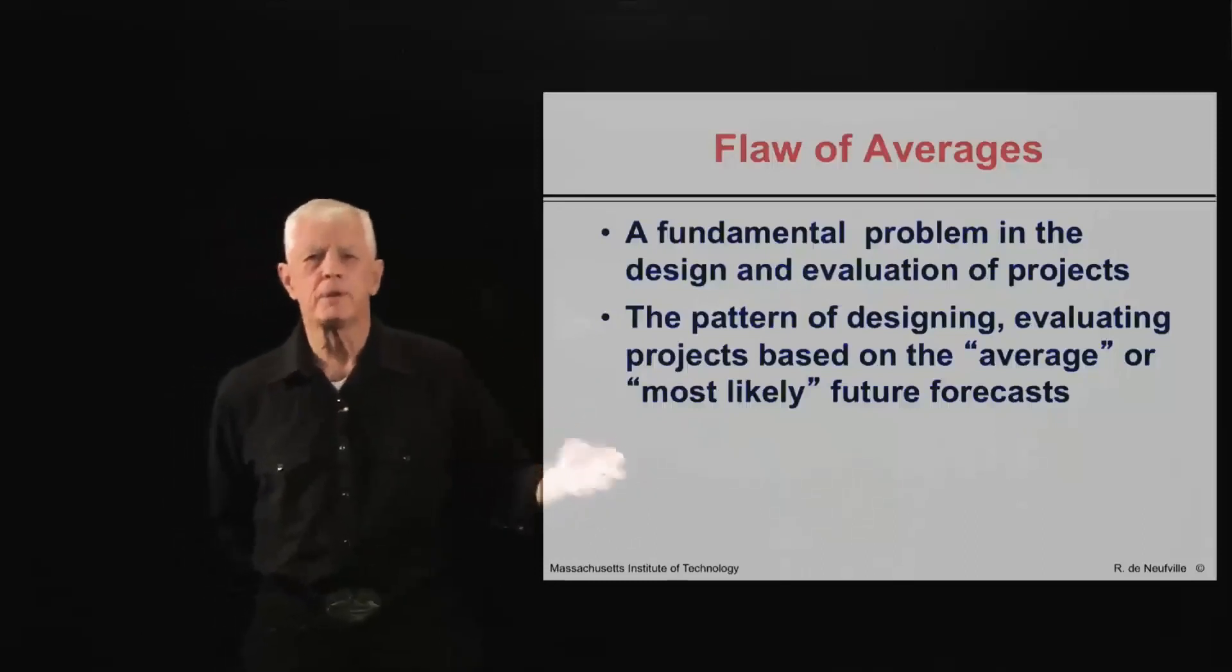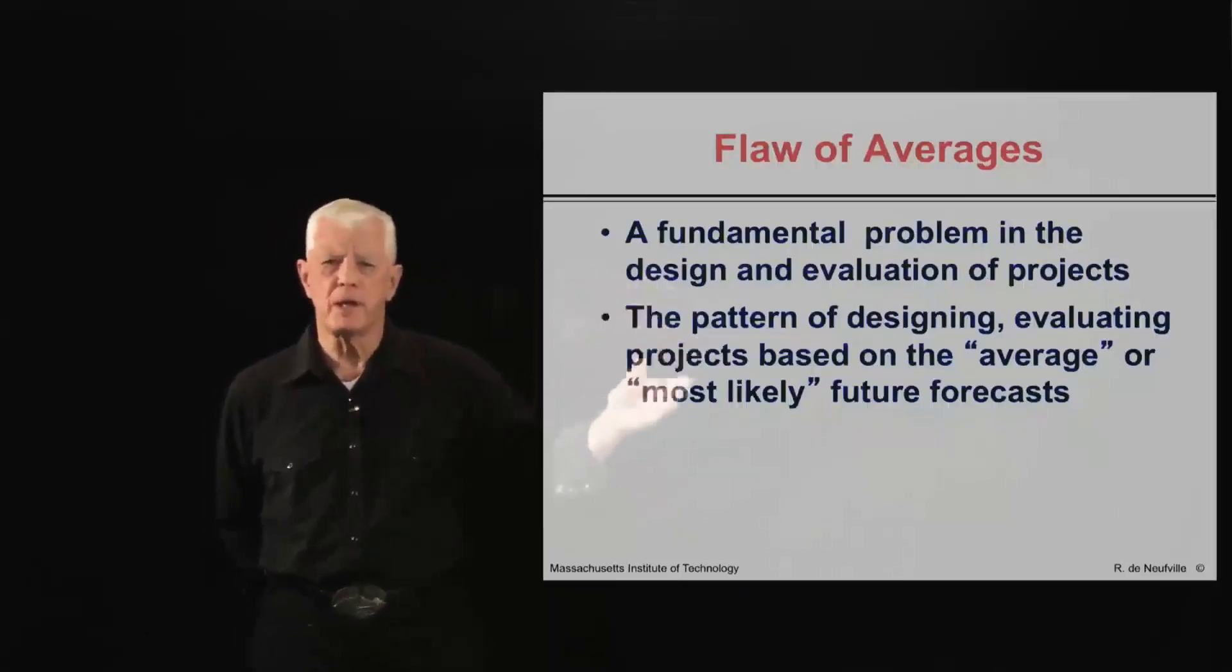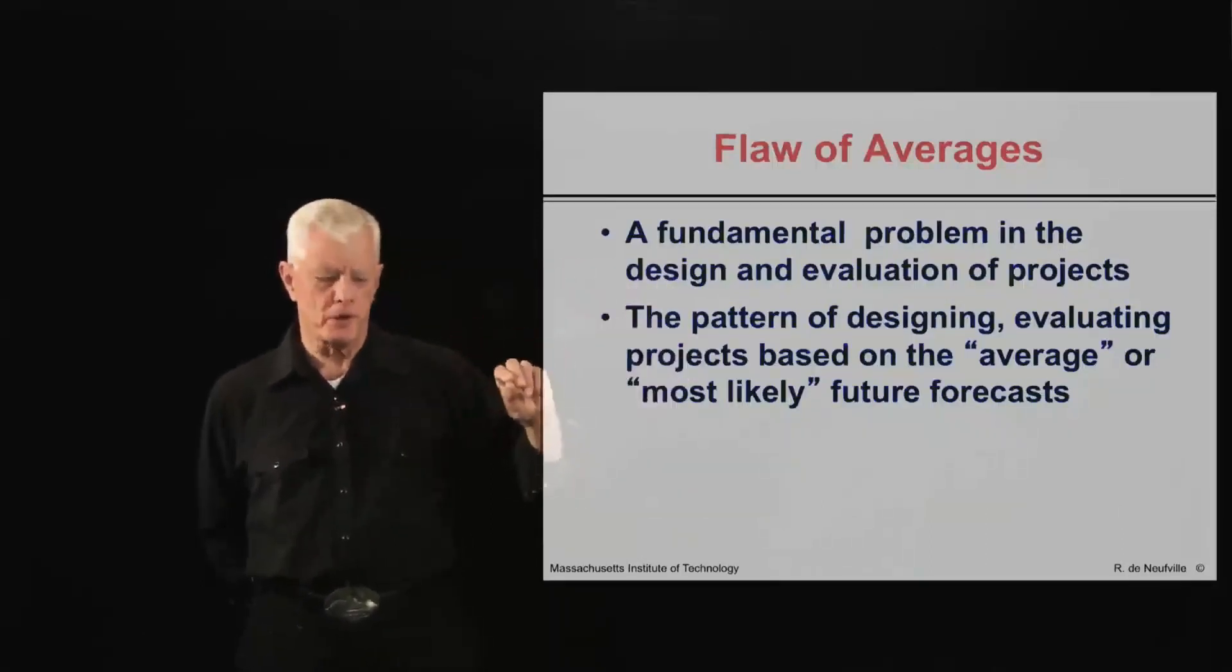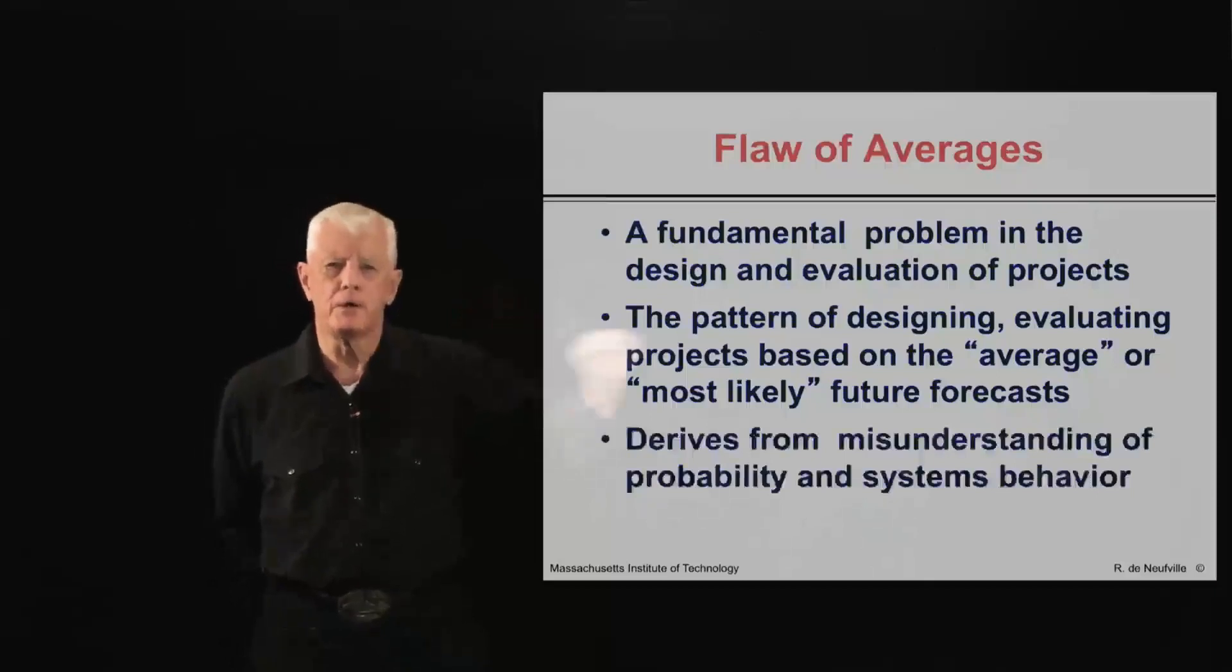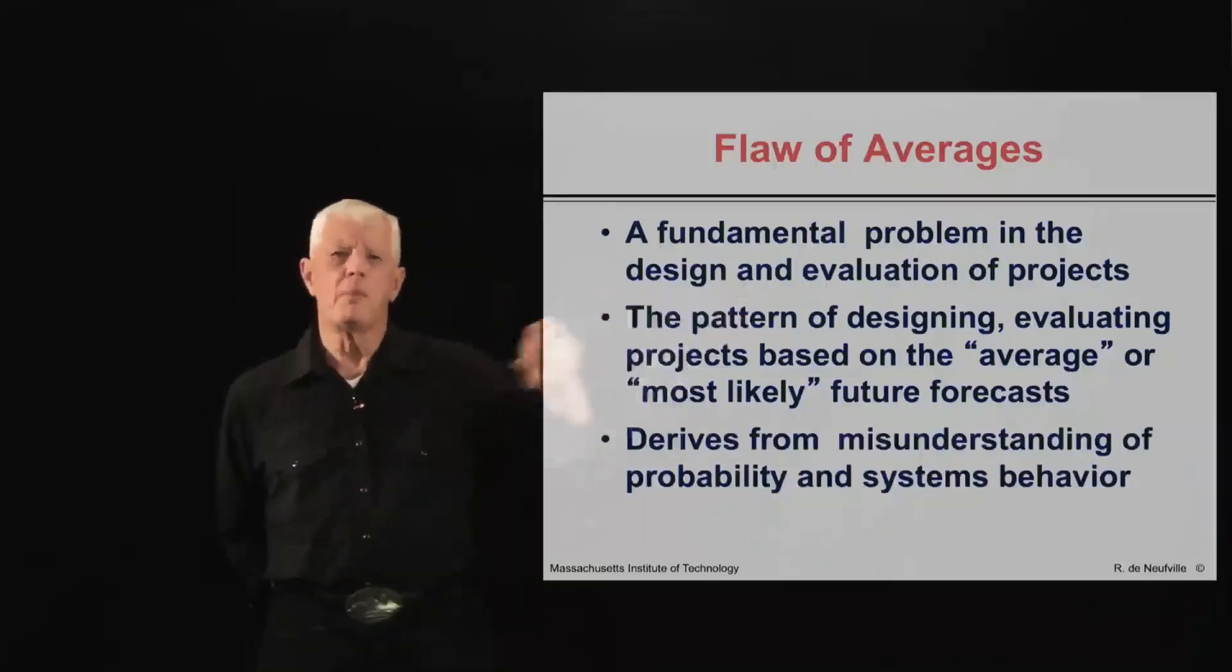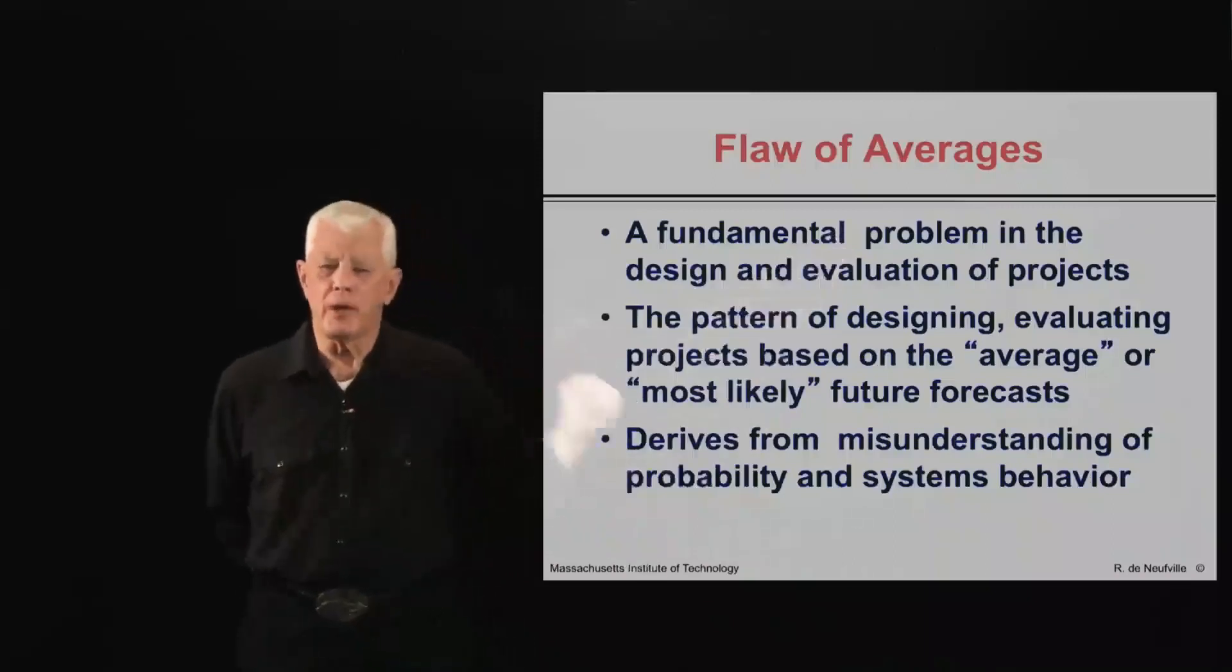Then what often happens is that people will take some variation around it, plus or minus 10%, say. But the fundamental choice is that they're looking at it from an average or a projection. Now, what happens is that there is a fundamental misunderstanding of probability and systems behavior when you do that.